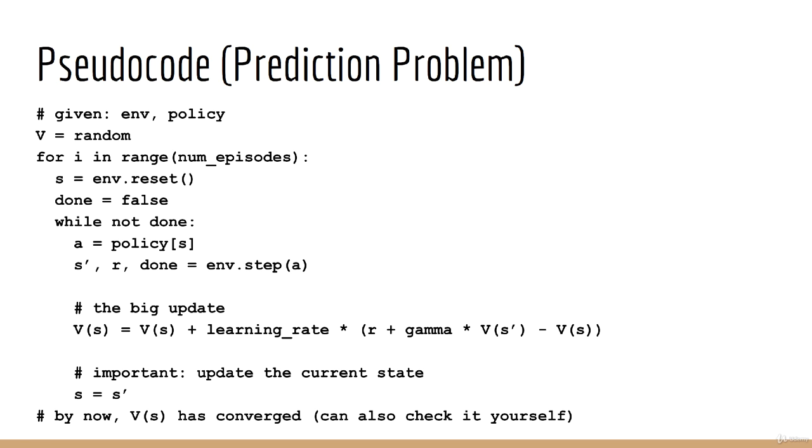Inside the loop, we grab the action from our policy. We then perform the action in the environment by calling env.step. This returns three things: the next state s', the reward r, and the next done flag. Note that I've designed this pseudocode to be similar to the OpenAI Gym API, which has become somewhat standard over the past few years. It's easy to understand and it will help you in the future if you ever do start using OpenAI Gym. The reverse is also true. If you've had experience with OpenAI Gym in the past, this should make things easier to understand.